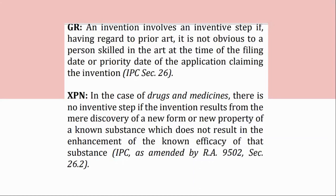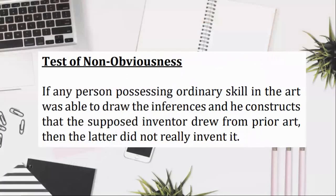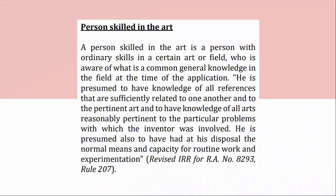Test of non-obviousness: if any person possessing ordinary skill in the art was able to draw the inferences and constructs that the supposed inventor drew from prior art, then the latter did not really invent it. Person skilled in the art: a person with ordinary skills in a certain art or field who is aware of what is common general knowledge in the field at the time of the application. He is presumed to have knowledge of all references that are sufficiently related to one another and to the pertinent art, and to have knowledge of all arts reasonably pertinent to the particular problems with which the inventor was involved. He is also presumed to have had at his disposal the normal means and capacity for routine work and experimentation. Revised Rules for RA No. 8293, Rule 207.